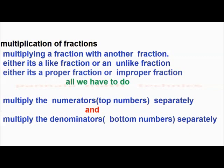Now, multiplying a fraction with another fraction — whether it is a like fraction or an unlike fraction, whether it is a proper fraction or improper fraction — all we have to do is multiply the numerators separately and multiply the denominators separately; the top numbers and bottom numbers separately.